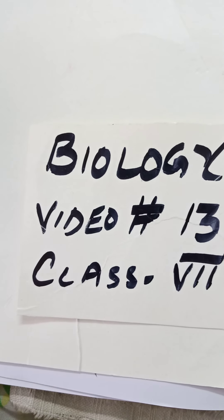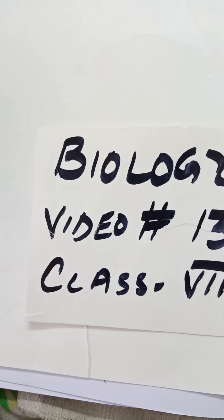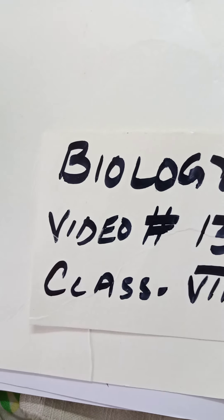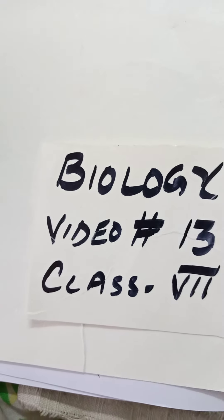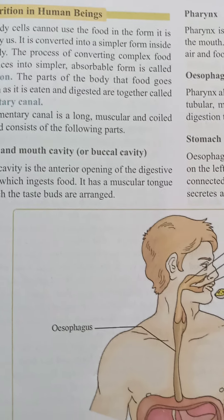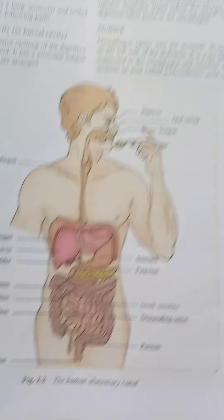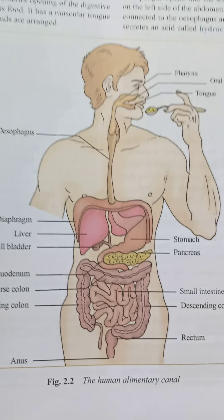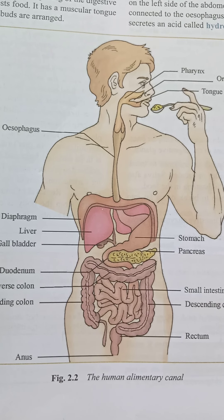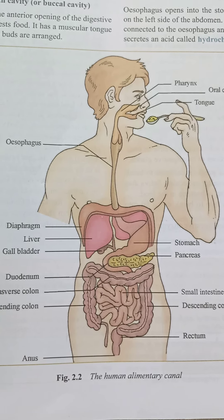Hello students of class 7, welcome back in my video number 13. As you know, we were on chapter number 2, Nutrition in Animals. I have explained the process of nutrition in human beings and the complete digestive system. Now we will continue — open your page number 15 and see figure 2.2, the picture of the human alimentary canal. I will explain the digestive system with the help of this figure.